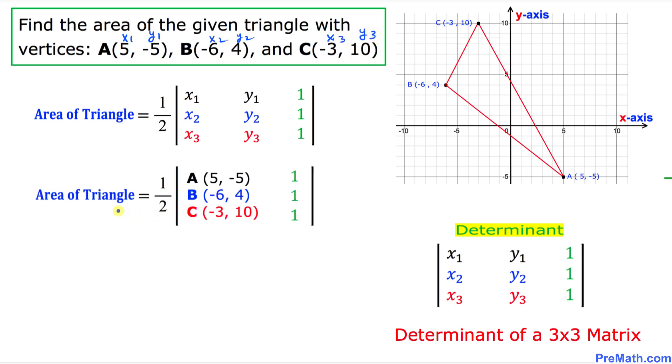Then the formula for the area of triangle can be written in terms of point A, B, and C as you can see.